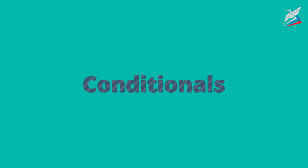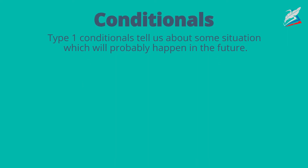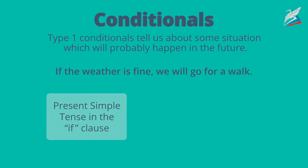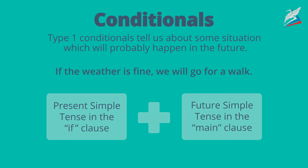There are different grammar rules in the English language. One of them is conditionals. Type 1 conditionals tell us about some situation which will probably happen in the future. For example: if the weather is fine, we will go for a walk. To form a type 1 conditional sentence, we need to use present simple tense in the if clause and future simple tense in the main clause.